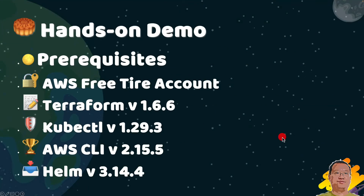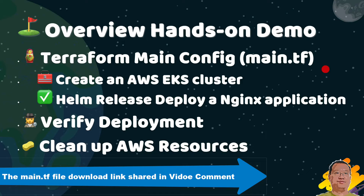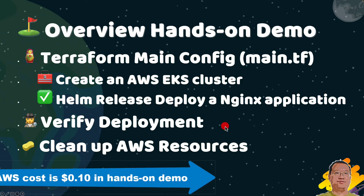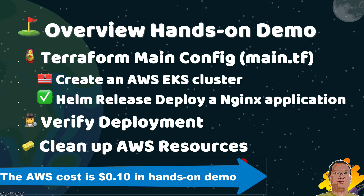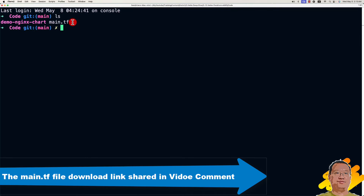Back to my slides. Let's quickly go over our hands-on demo. In the Terraform main.tf file, it creates an EKS cluster with one EC2 T3 medium worker node. After the cluster is created, the Helm release resource will deploy the nginx chart, and then we'll verify the deployment together. One important thing to save your cost: clean up the AWS resources after your exercise. Open my terminal — make sure you download the main.tf file from my blog and run the following commands in the main.tf file folder.